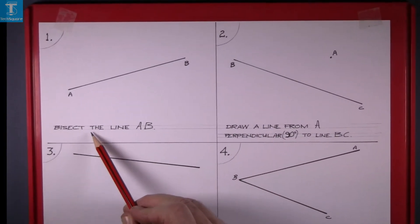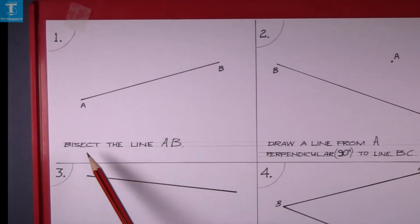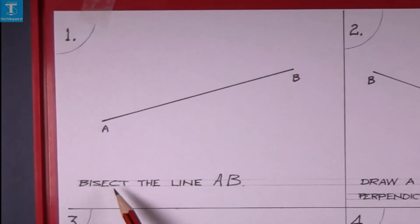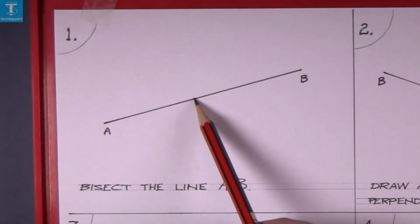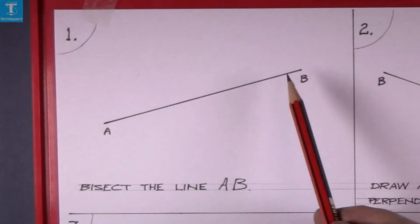The first one here is to bisect a line AB. Bisect means divide into two. So from A to the center and from the center to B, that's two equal parts.